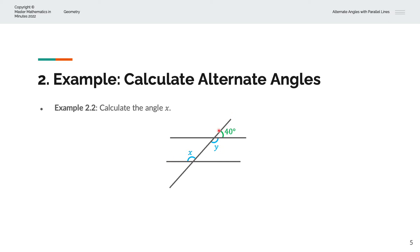We can recognize that this is a straight line, and the total angle on a straight line is 180 degrees. So we can solve for Y as 180 degrees minus 40 degrees, which simplifies to Y equals 140 degrees. We know that X and Y are alternate angles, so they must be identical. Therefore, X equals Y equals 140 degrees.